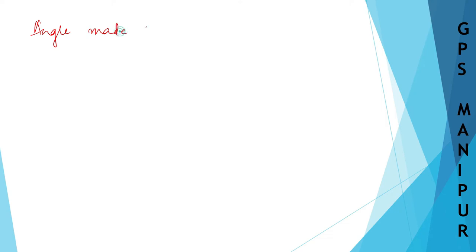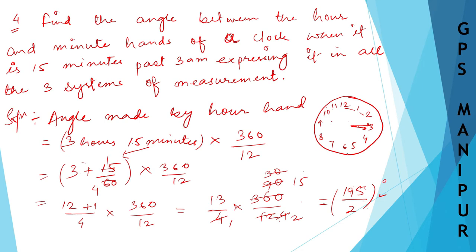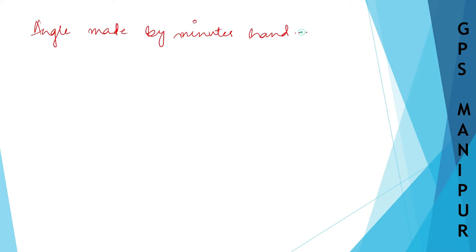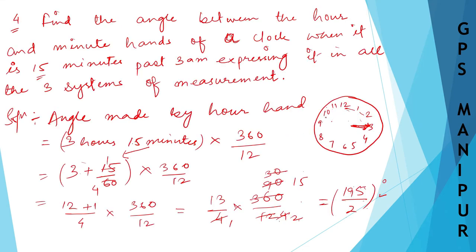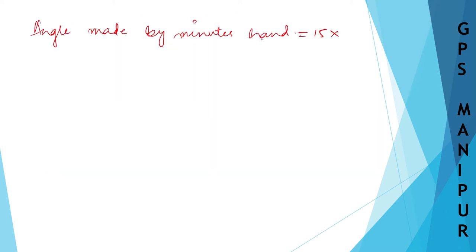Now let us find the angle made by the minute hand. The minute hand is at 15 minutes. In a complete rotation of 360 degrees there are 60 minutes, so: 15 × 360/60 = 15 × 6 = 90 degrees. The angle made by the minute hand is 90 degrees.